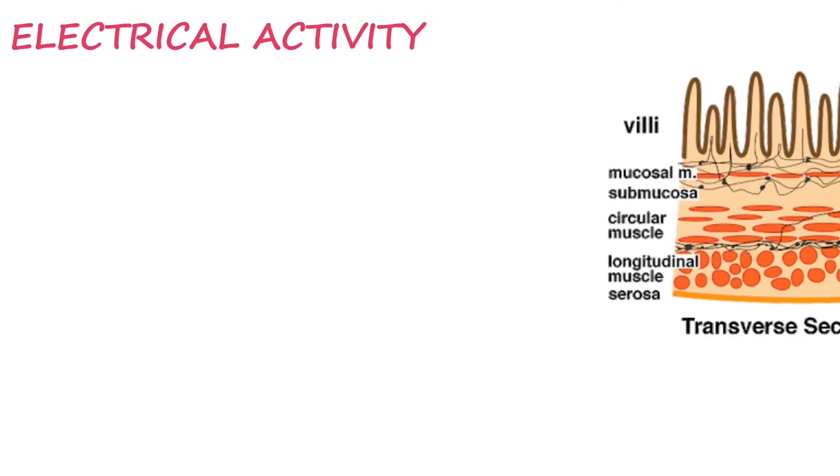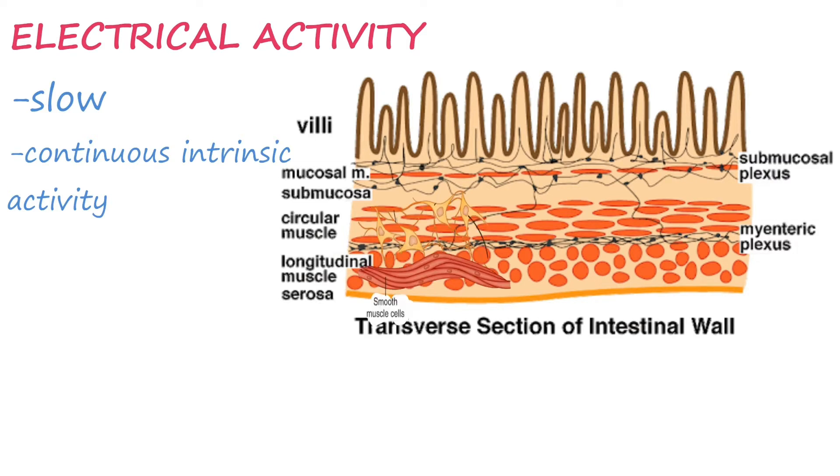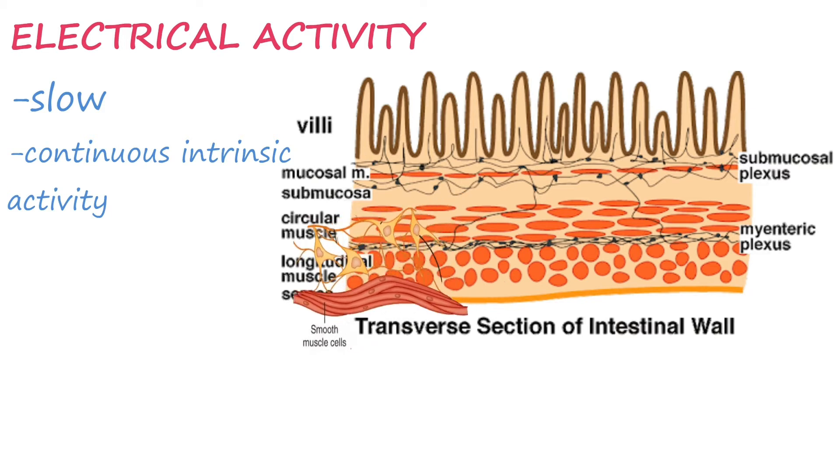Now that we are clear about this, we can move to electrical activity. The electrical activity in GI system is a slow continuous intrinsic activity in the smooth muscle membrane. The first initiation is through the interstitial cells of Cajal.